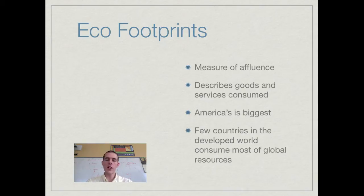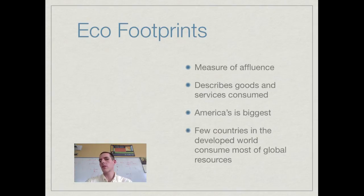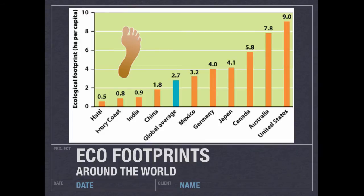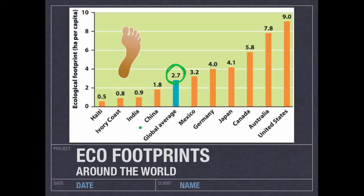America has far and away the biggest eco footprint per capita of any nation in the world. Looking at a chart to make some comparisons: the global average is 2.7 hectares per person, meaning the average citizen of planet earth needs about 2.7 hectares to meet their daily needs. Going into the developing world — China has a per capita footprint of 1.8 hectares, India 0.9, the Ivory Coast in Africa 0.8, and Haiti — the least developed country in the West — has an eco footprint of just 0.5 hectares per person.